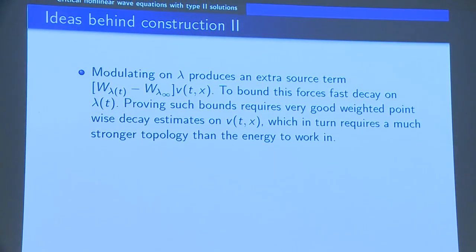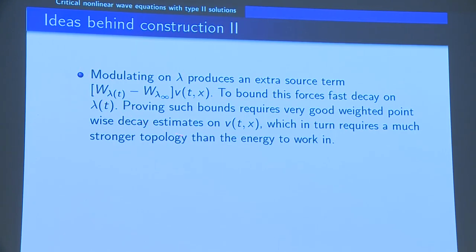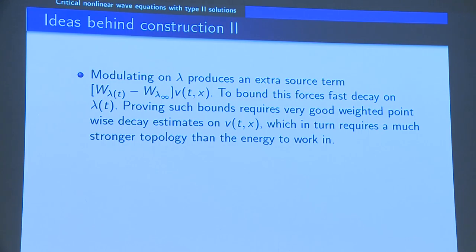Now here comes the topology. You get error terms if you modulate in this fashion. You get errors which are in some sense very bad. To control these errors — because you have to integrate in time via the Duhamel formula — you have to make sure that λ(t) converges sufficiently rapidly to λ_∞, which requires imposing a lot of decay on the perturbation at time zero and also enough smoothness.